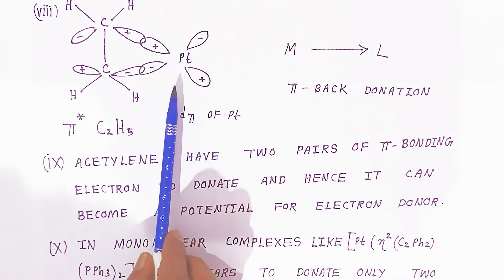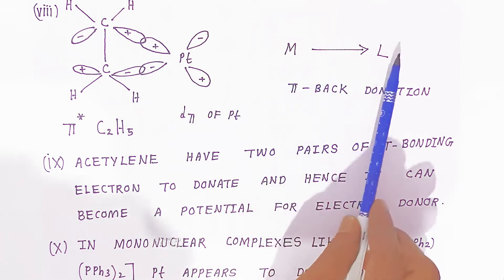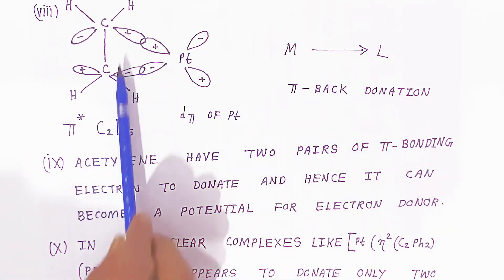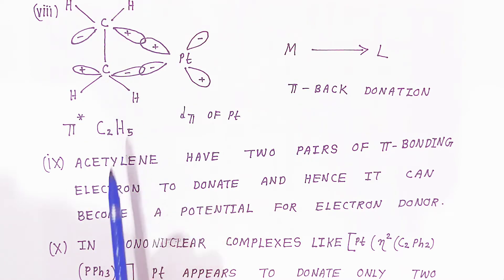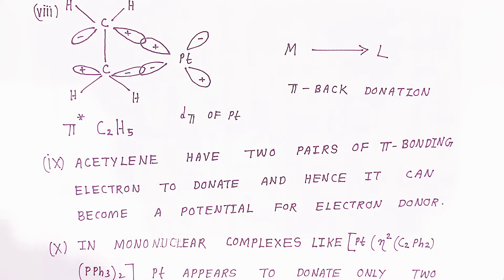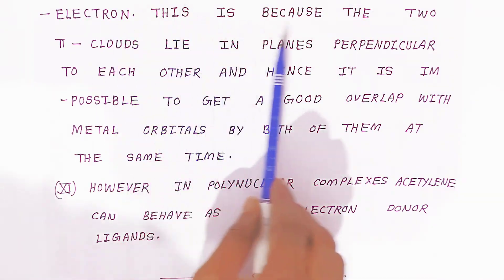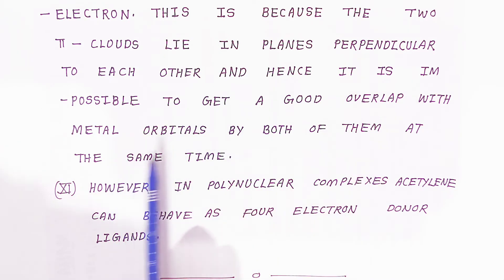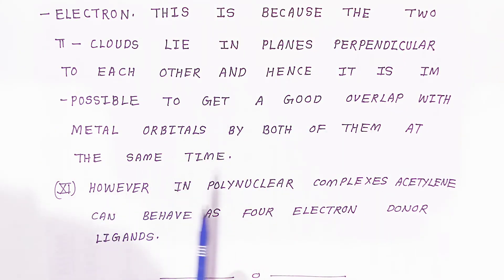In the diagrammatic representation, the metal donates a lone pair to the ligand — this is metal-to-ligand bond, called pi back-donation — where the metal donates electrons to the pi-star orbitals of acetylene. Acetylene has two pairs of pi bonding electrons to donate, making it a potential four-electron donor. However, in a mononuclear complex like bis triphenyl phosphine diphenyl acetylene platinum, platinum appears to accept only two electrons, because the two pi clouds lie in perpendicular planes, making it impossible to get good overlap with the metal orbitals by both at the same time. In polynuclear complexes, acetylene can behave as a full four-electron donor ligand.